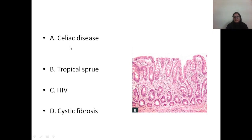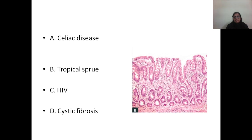Celiac disease is a malabsorptive syndrome that results because of sensitivity to gluten. Diagnosis is possible by serum IgA endomysial antibody estimation where specificity can reach up to 100%. Serum tissue transglutaminase estimation can also help in diagnosis. However, patients who are deficient in serum IgA will have normal tissue transglutaminase levels, so serum IgA levels should be checked when TTG is normal in suspected cases.